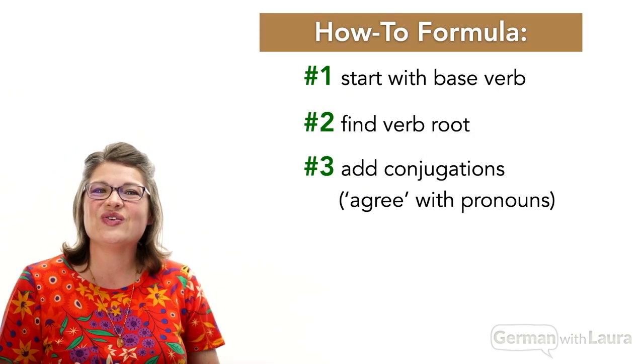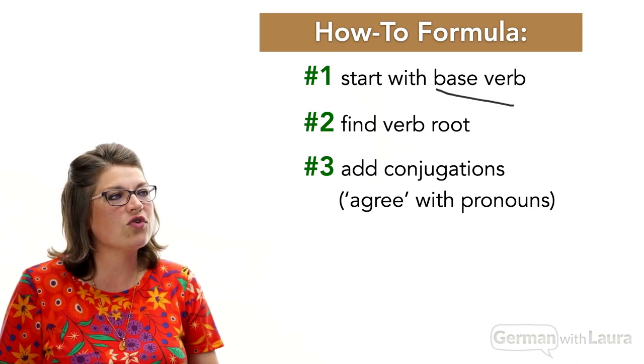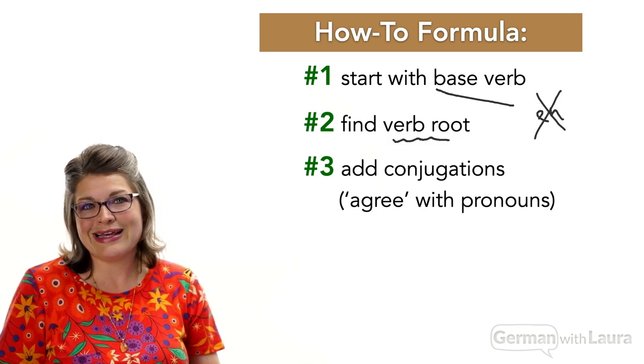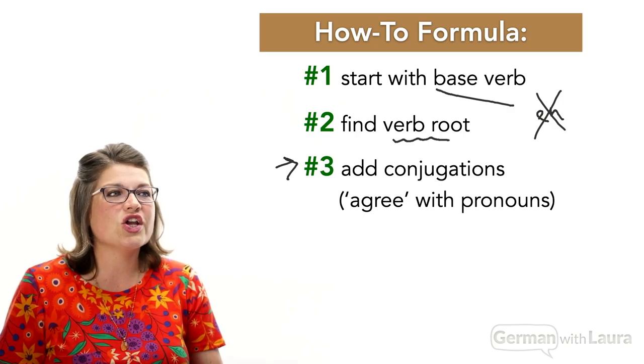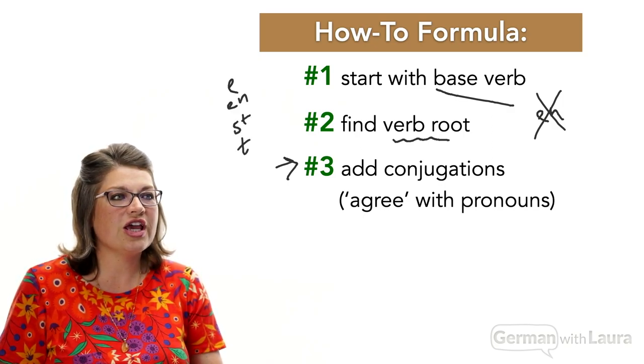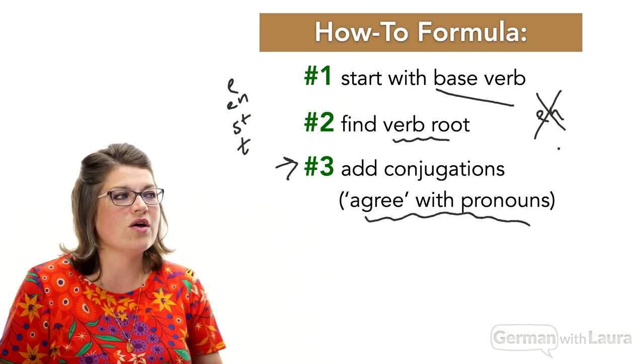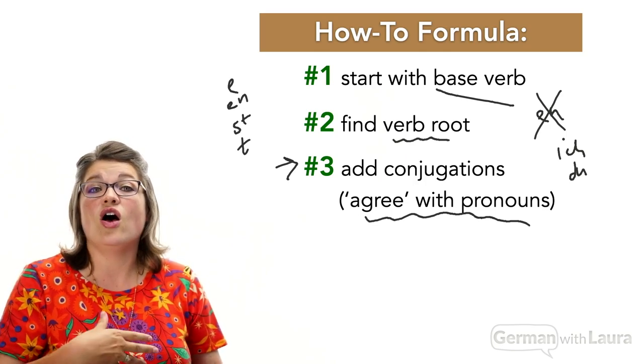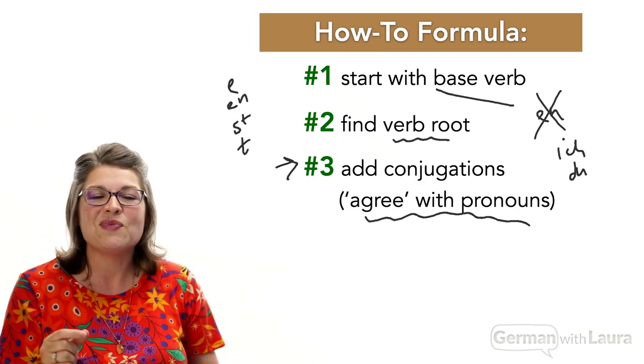In this video, you have learned how to start with the base or infinitive verb, reduce it down to the verb root by taking off -en, and then add one of four conjugations — -en, -e, -st, or -t — that must agree with the pronouns ich, du, et cetera, to get the correct present tense form. But it's not only verbs that change so much in German — nouns also change a lot. Keep watching here on YouTube and click on the next video to learn about why German nouns are so hard!